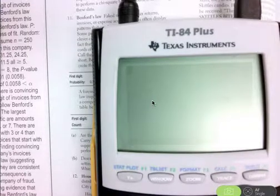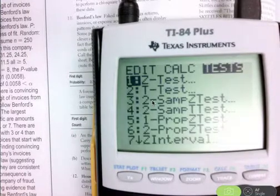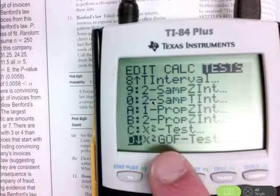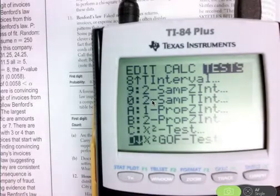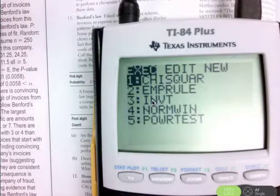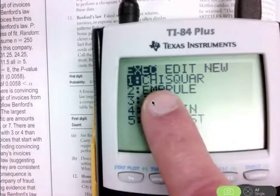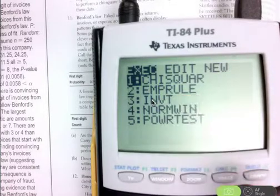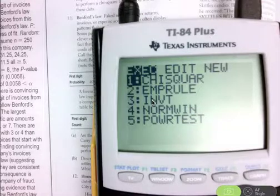you can easily either under stats, you can go to test, and you can do the chi-squared GOF test, that stands for chi-squared goodness of fit test. Depending on the type of calculator you have, you could also use the chi-square program. Either way, you have to make sure your observed counts are in list 1, and the expected counts are in list 2.